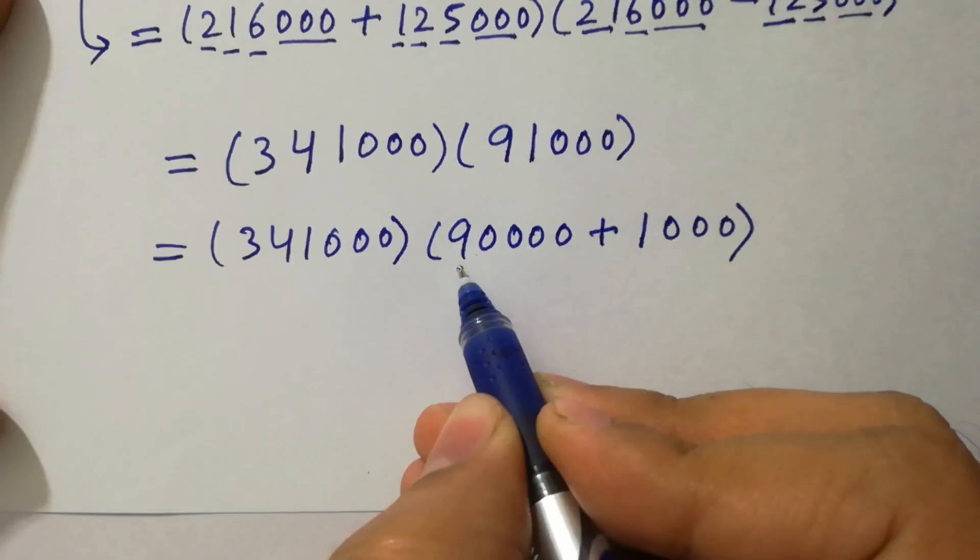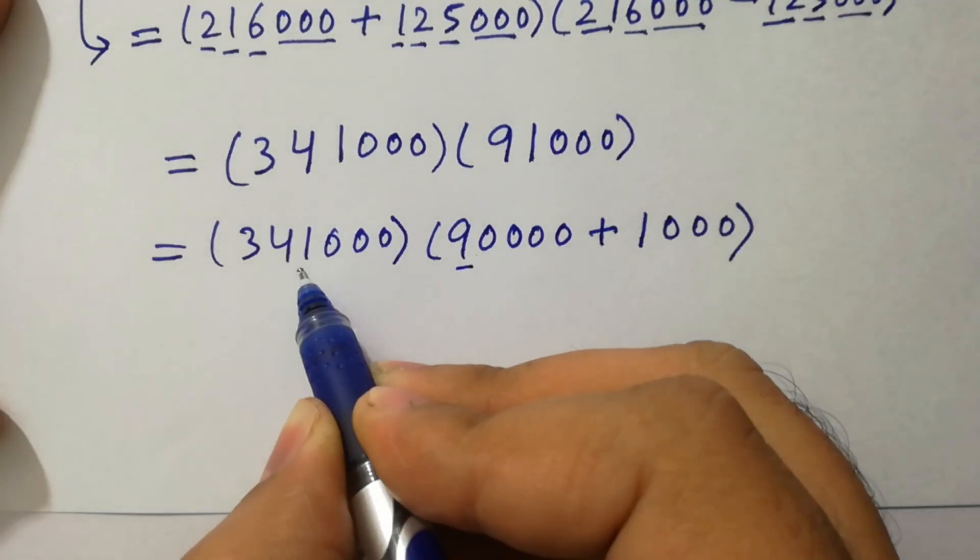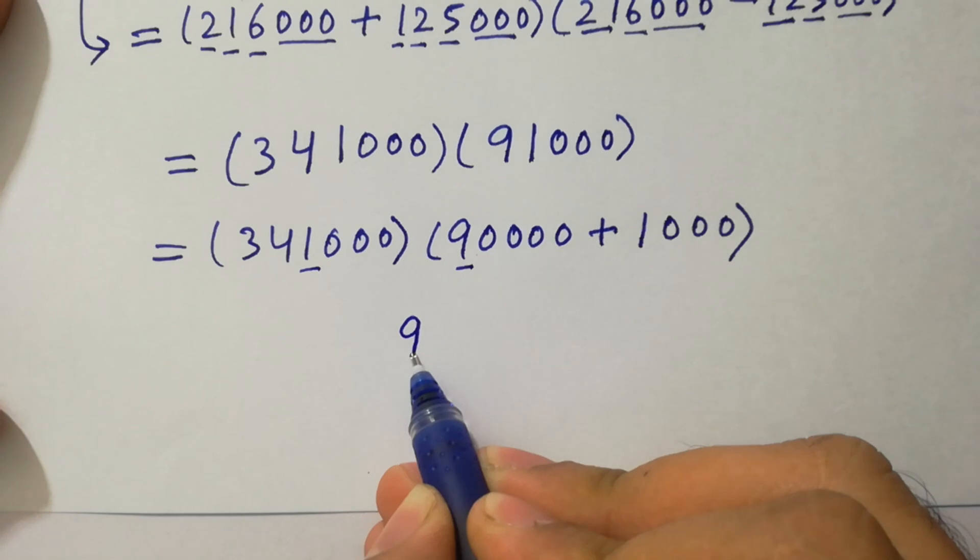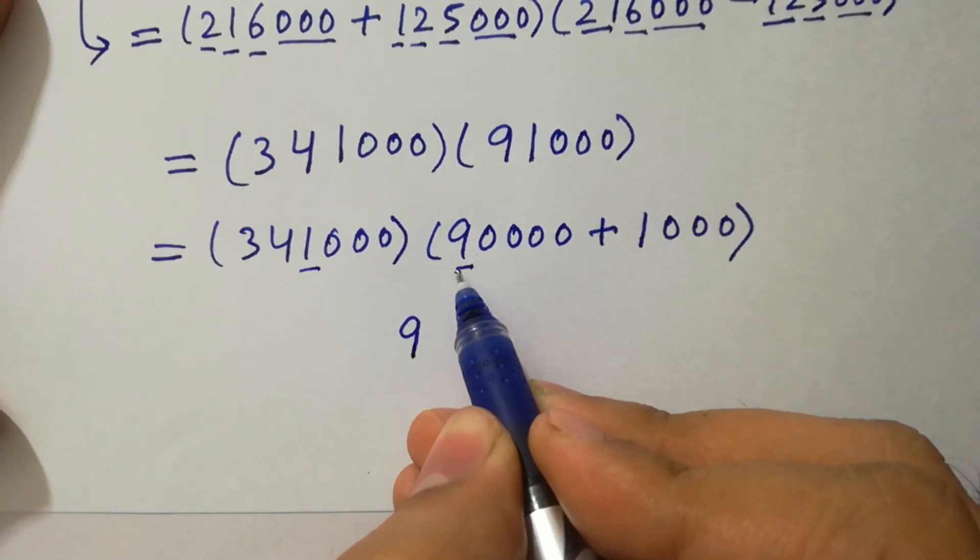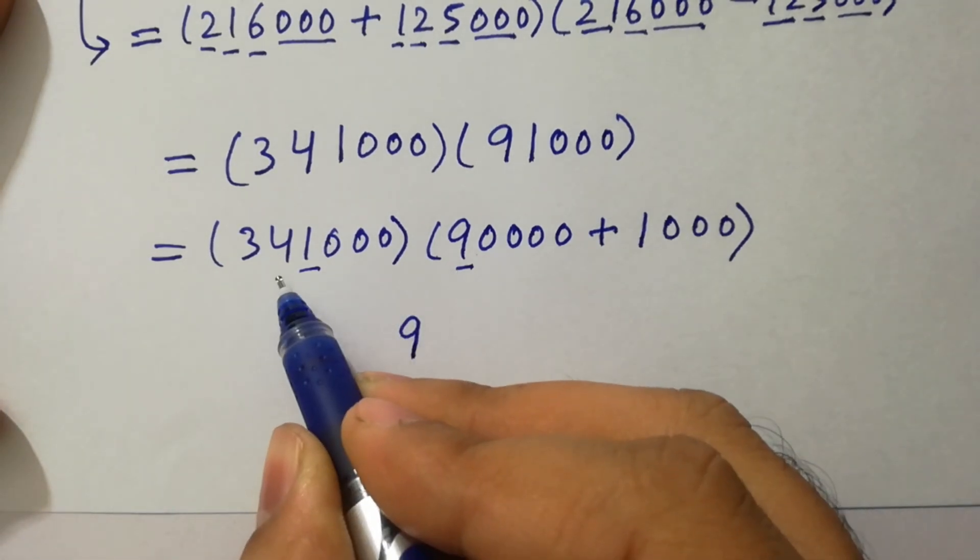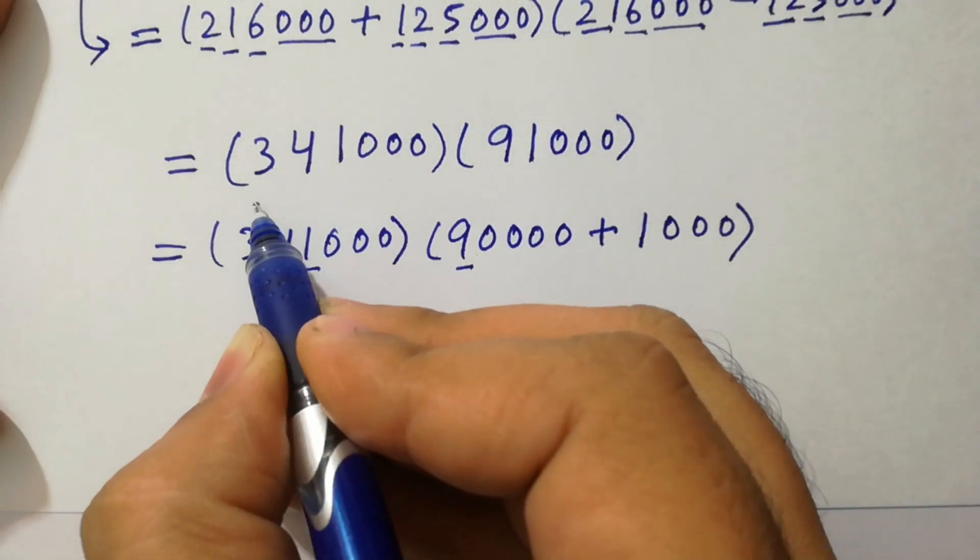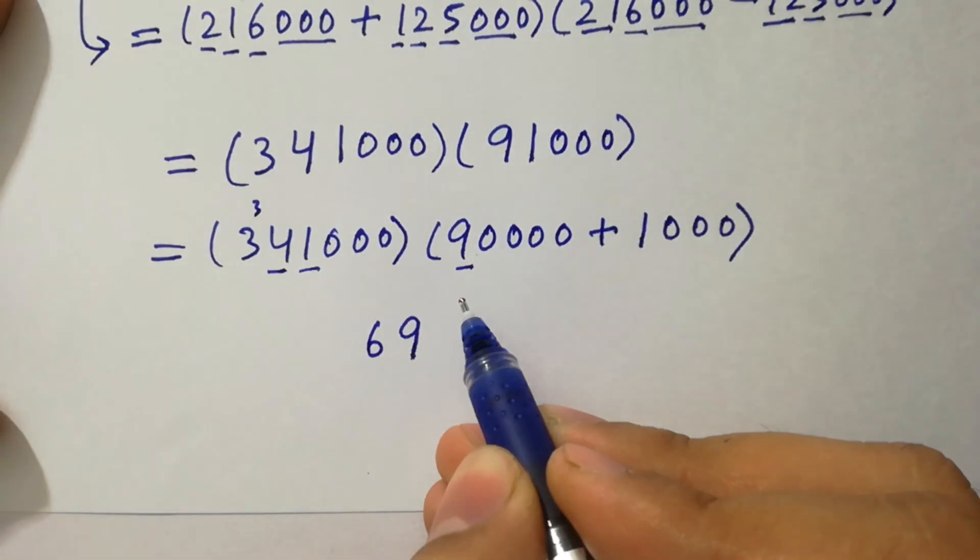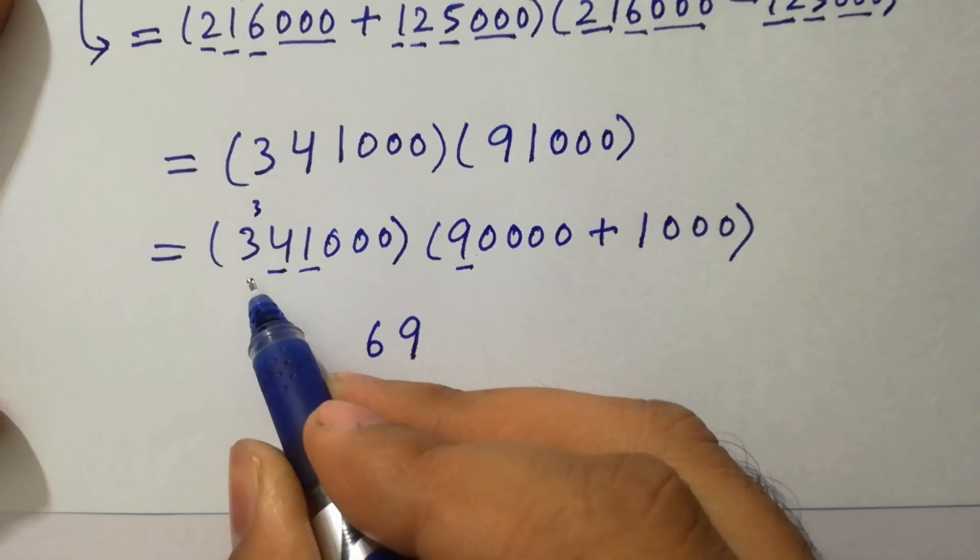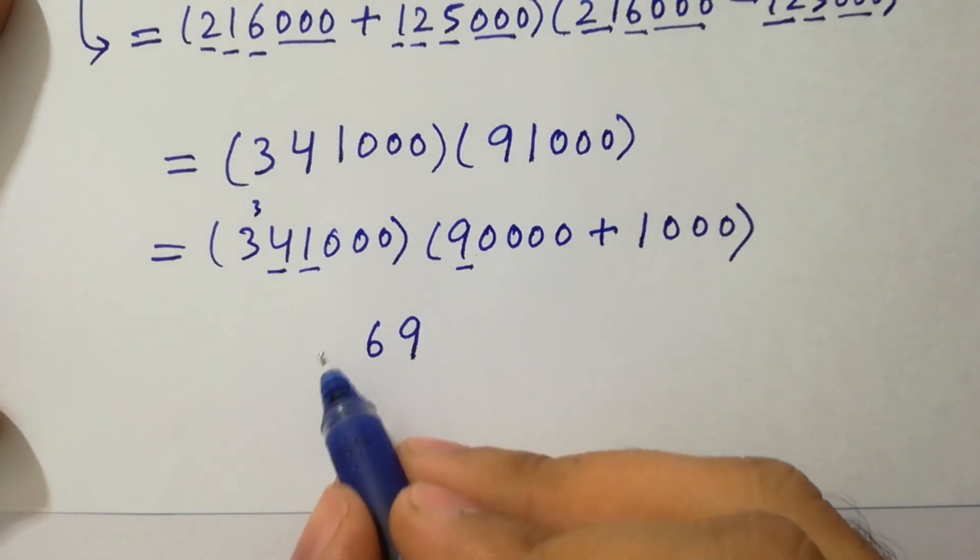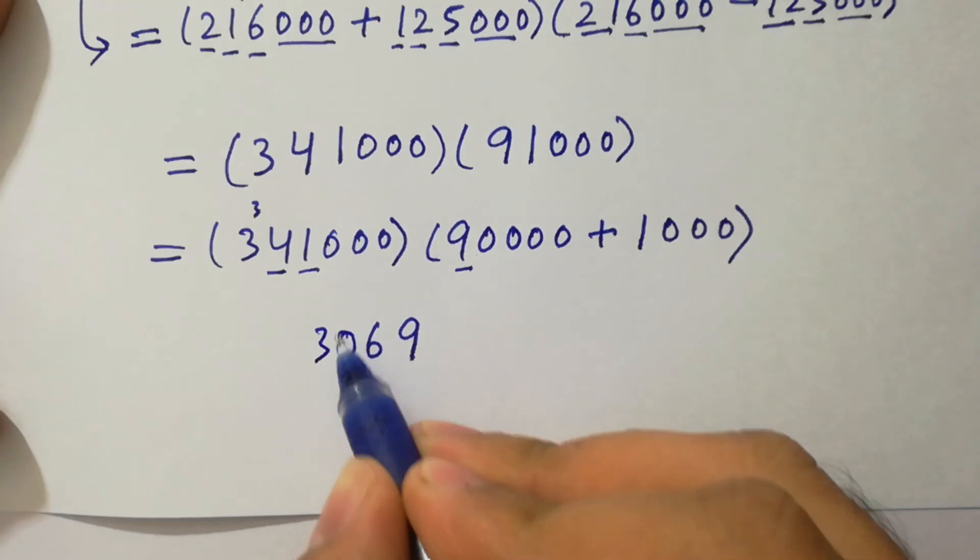We have here 9 times 1, we have here 9. Next, we have here 9 times 4 is 36. 6 here, 3 carry. Next, we have here 9 times 3 is 27. 27 plus 3 is 30, as it is.